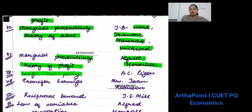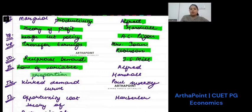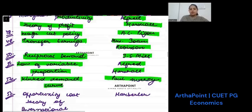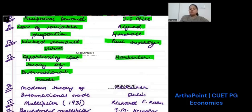Marginal productivity theory of profit was given by Marshall. Wage cut policy was given by A.C. Pigou. Transfer earnings was suggested by Mrs. Joan Robinson. Theory of reciprocal demand was given by J.S. Mill. Law of variable proportion was given by Alfred Marshall. Kinked demand curve was given by Paul Sweezy. Opportunity cost theory of international trade was given by Haberler.